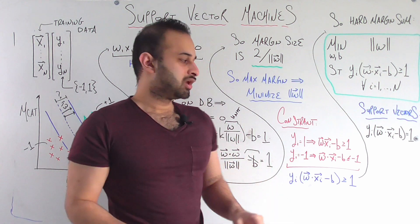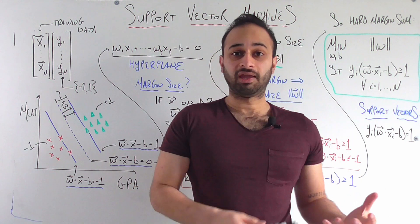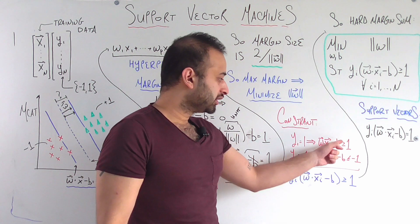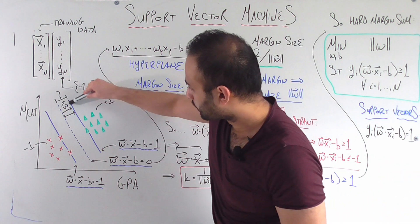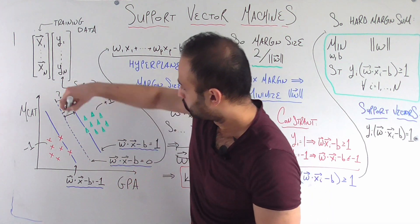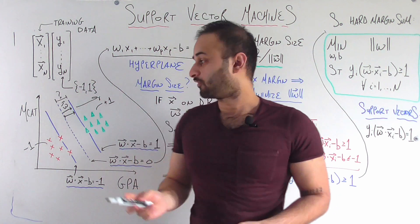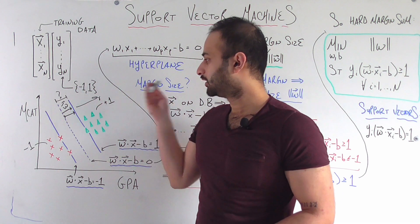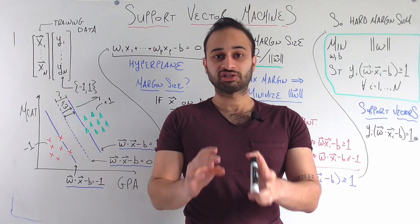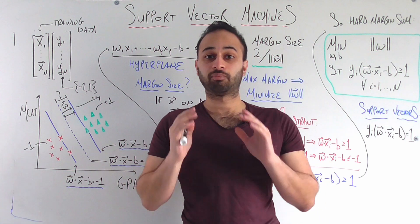What does that mean? w dot xi minus b is bigger than or equal to 1. Which vectors obey that condition? We know that this would be a strict equality if we were on this top line, which means that it's going to be greater than or equal to if we are anywhere in this space over here. So we're saying that for all vectors who are in this space over here, we require that they get classified as plus 1s. So this is enforcing the condition that anything on this side of the margin gets classified as a plus 1.